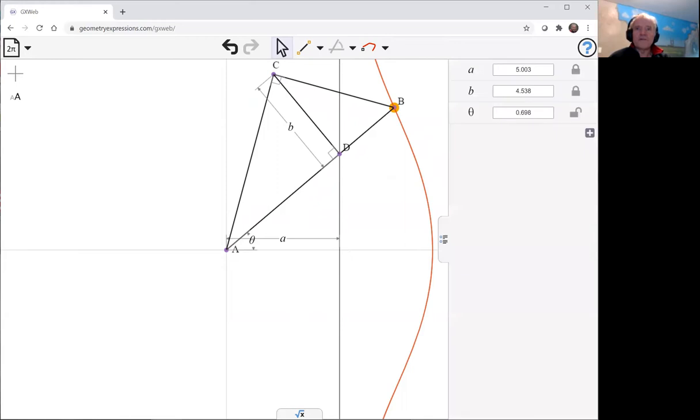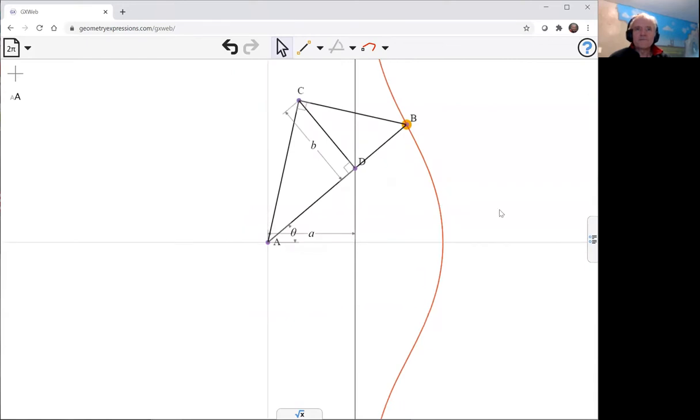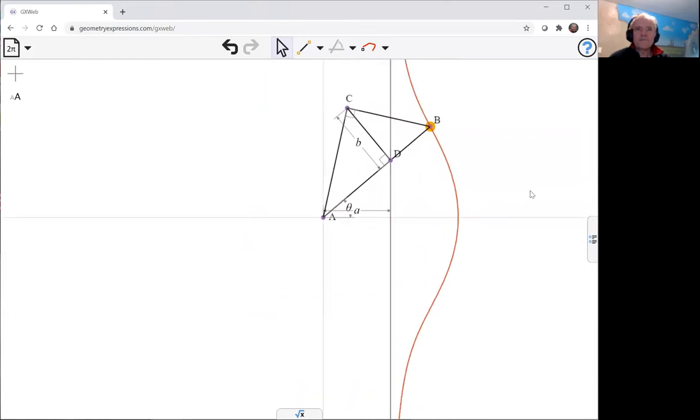And now we can have a look at what changing the parameter B does to that. So there it is, the conchoid sluice, and let's have a look at its equation.